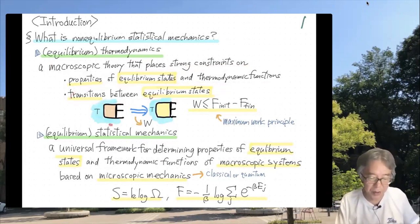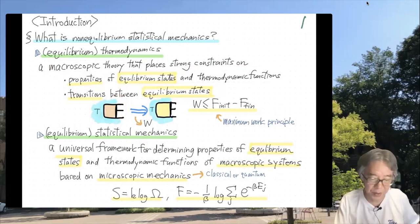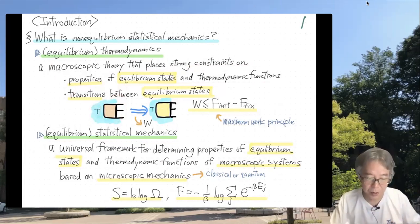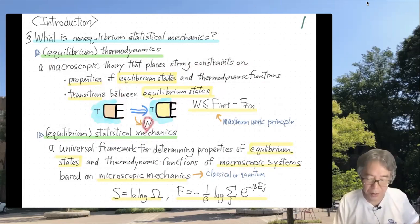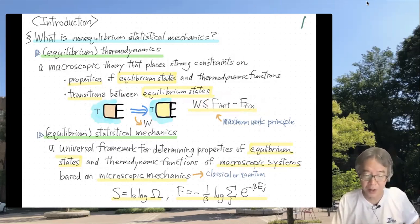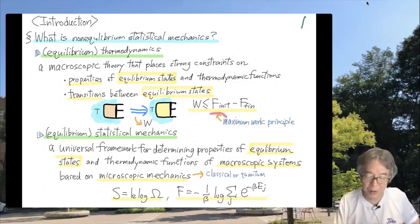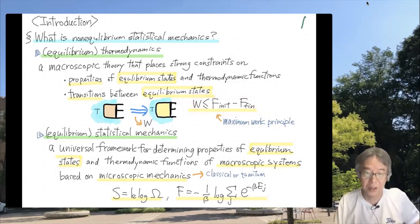For example, consider a gas in a piston-cylinder surrounded by an environment with fixed temperature T. You move the piston, starting from one equilibrium state and changing the system to a different equilibrium state. During this process, you could extract work W from the system. It is well known that W is upper bounded by the difference in Helmholtz free energy — the maximum work principle, one form of the second law of thermodynamics. This is a typical exact and quantitative relation in equilibrium thermodynamics.